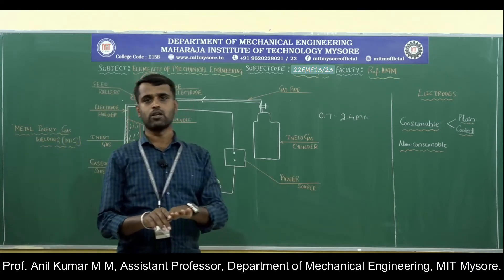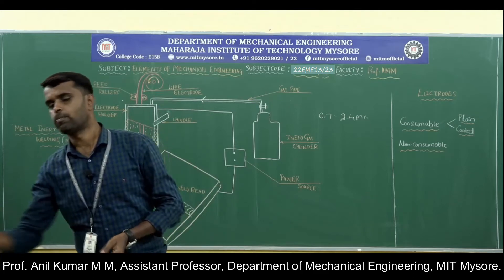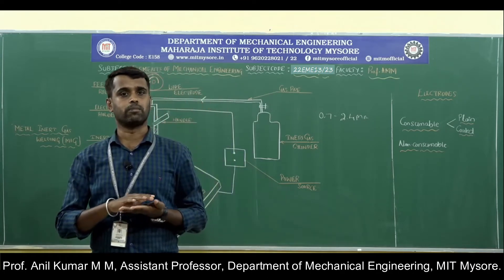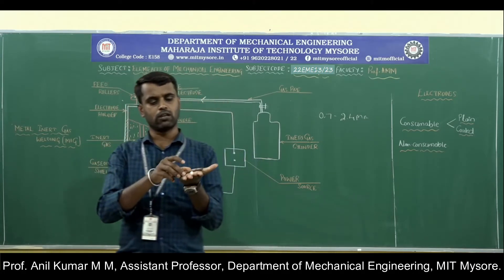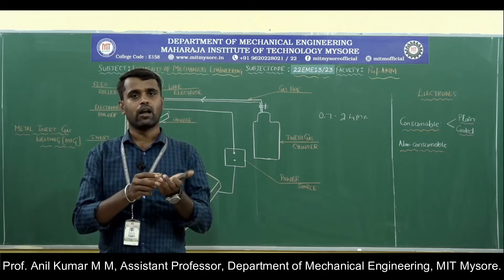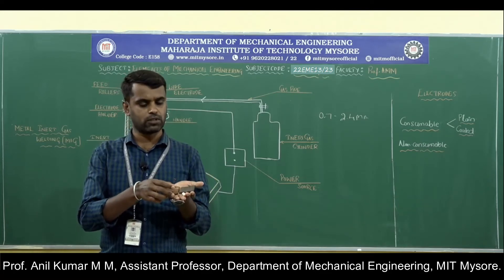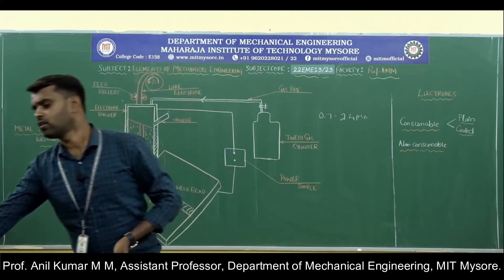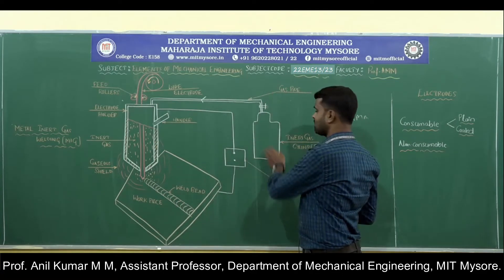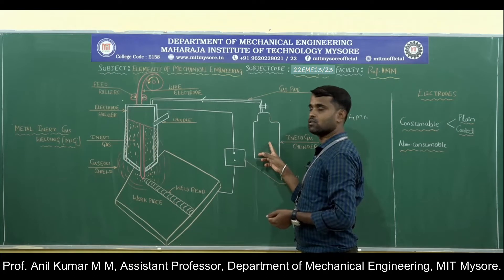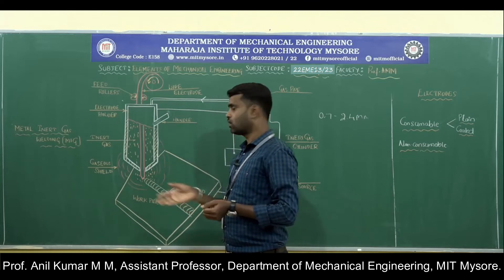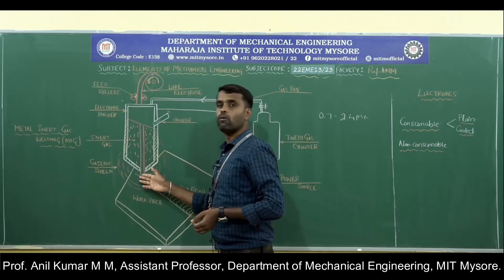For the working procedure, initially take the two metal pieces to be joined, clean their edges by removing dust particles, grease, and oxides from the surface, then position them with a suitable gap. Next, turn on the power source and the inert gas cylinder. A separate inert gas cylinder carries the inert gases and is connected to the welding torch. At the tip of the welding torch — which looks like a nozzle — the inert gases pass into the welding pool area.